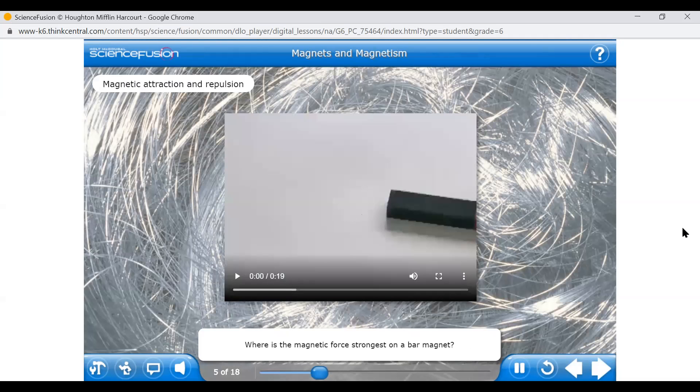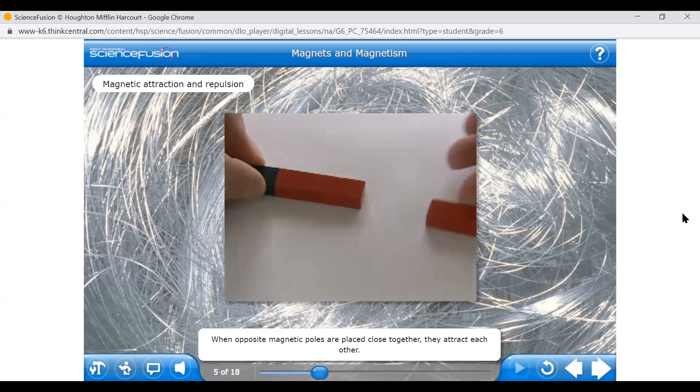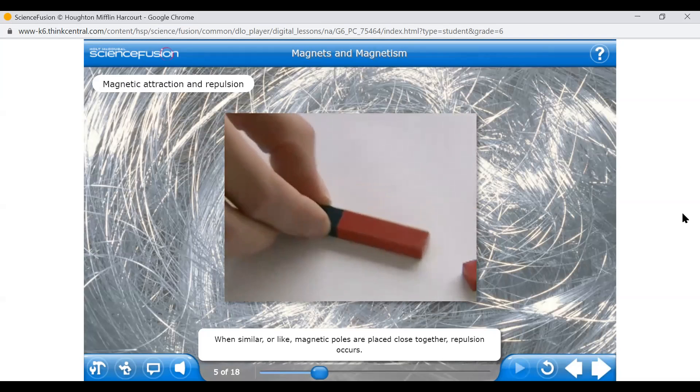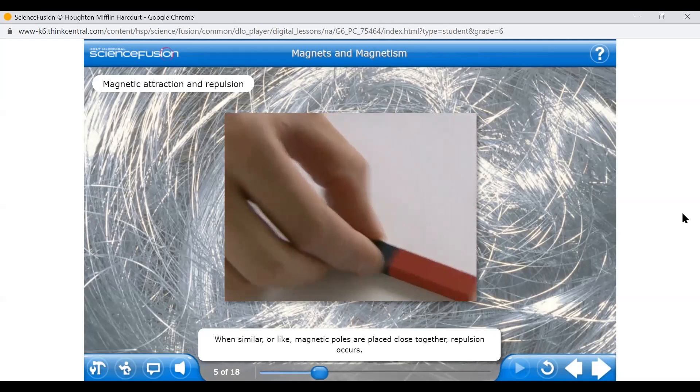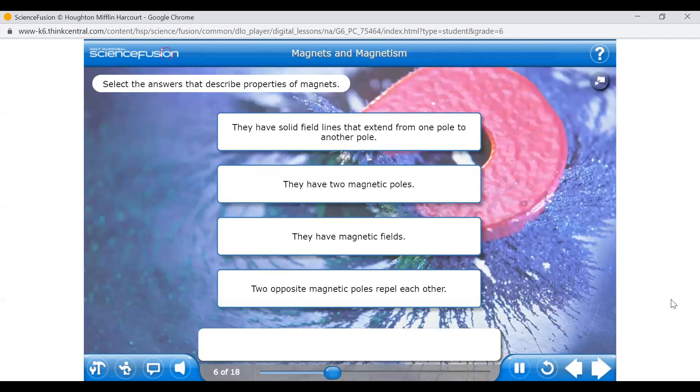Where is the magnetic force strongest on a bar magnet? That's right! Bar magnets are strongest at the two magnetic poles. What do you think will happen when one of the poles of one magnet is placed against a pole of another magnet? Click play to find out. When opposite magnetic poles are placed close together, they attract each other. When similar or like magnetic poles are placed close together, repulsion occurs. Magnetic force can be either attractive or repulsive, just like the force between positive and negative electric charges.